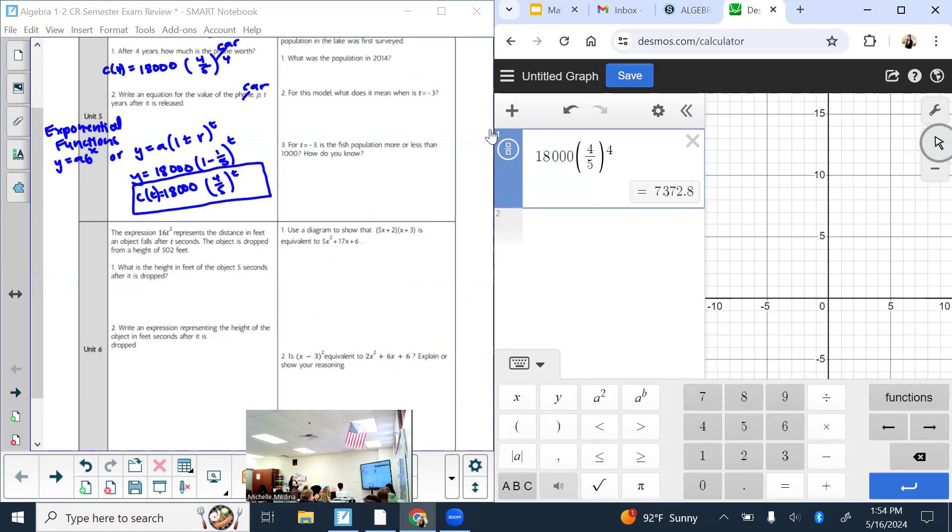So please put it all in the calculator. I know tomorrow someone will do 18,000 times four fifths and then square the 14,400, or they'll put that to the power of four, when really you're supposed to do the exponent first. If you put it all in at once, it will just do it for you. So after four years, that is what it's worth. Since we're talking about money, how many decimal places should I have? When I write my answer, it should be $7,372.80.